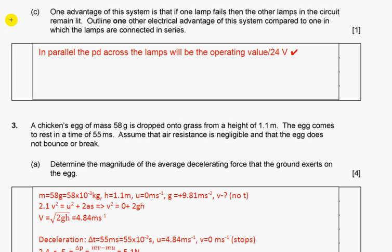One advantage of this system is that if one lamp fails, then the other lamps in the circuit remain lit. Outline one other electrical advantage of this system compared to one in which the lamps are connected in series: In parallel, the potential difference across each lamp will be the operating 24 volts.